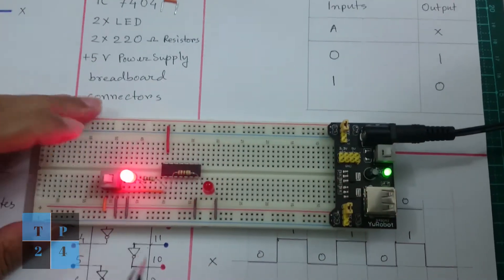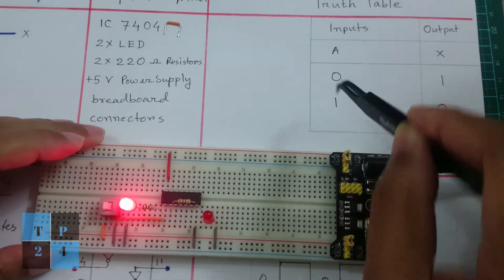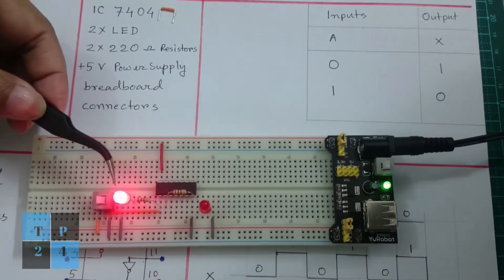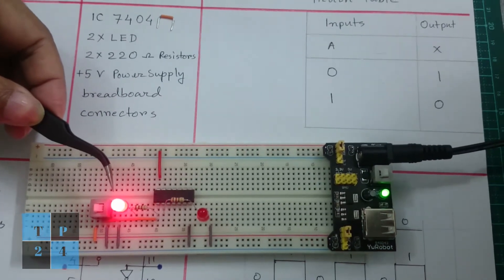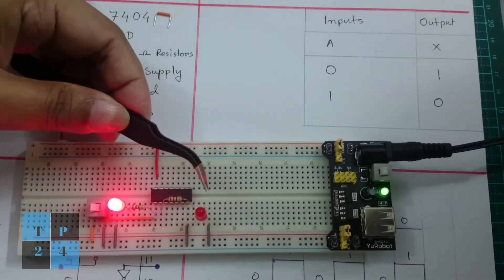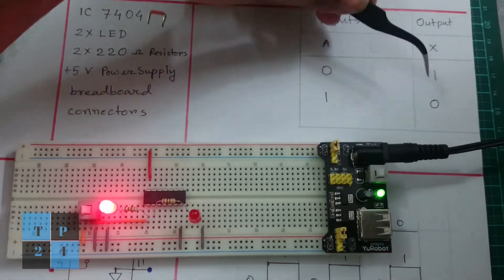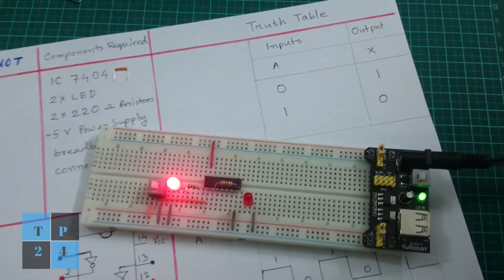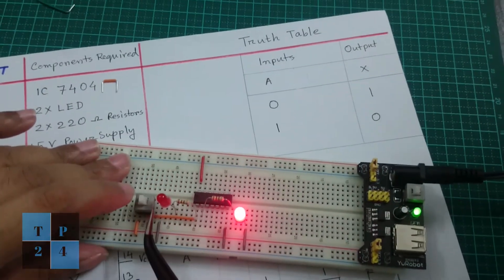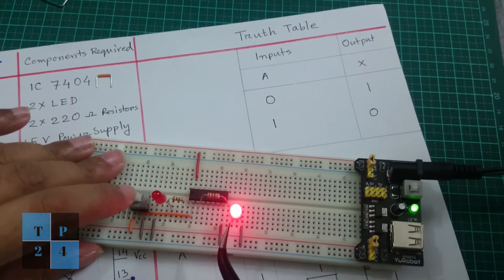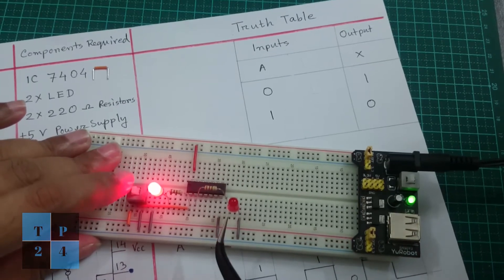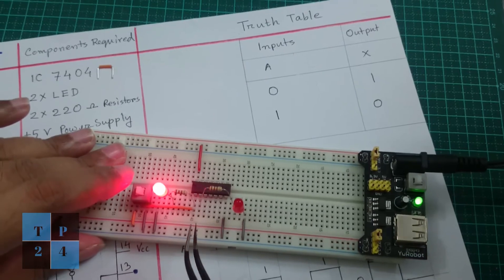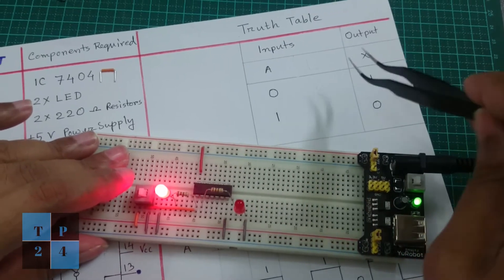If I push, we are making it high here. Input LED is on and it is high, and output LED is off. That means here is zero. So this operation - low input gives high output, high input gives low output. This is the function of inverter and it follows the truth table of the inverter.